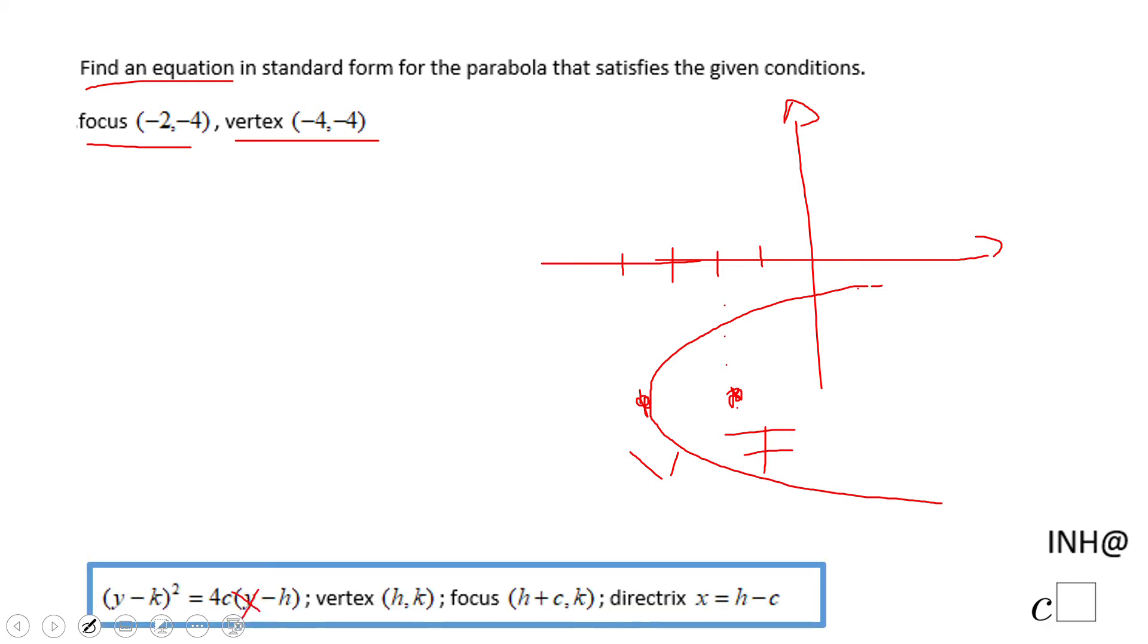Because the focus needs to be inside of the parabola. So now I know what equation I'm going to use. I'm going to use this one. And by the way, I know that I am going to end up with a positive value on the right side, where that c is.